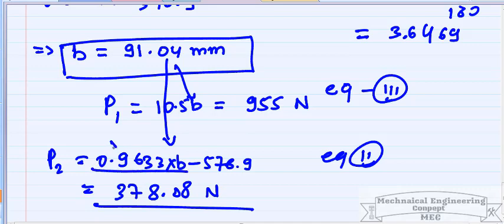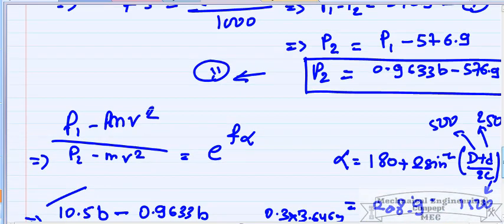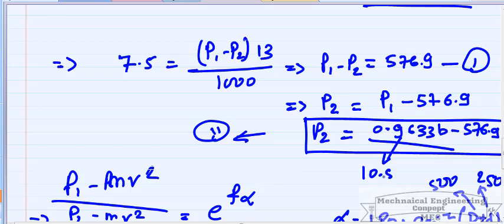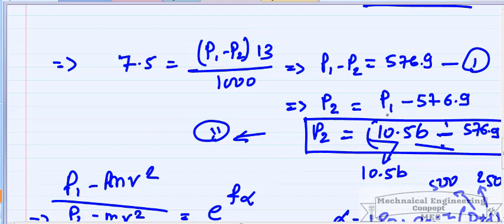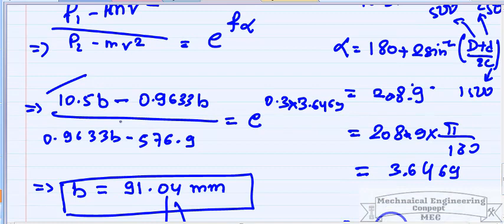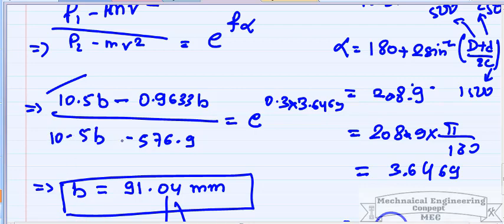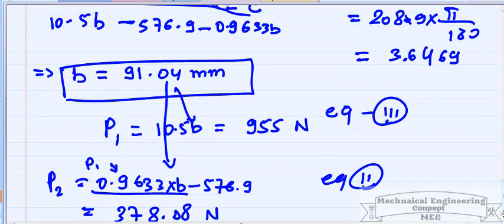Correcting the earlier working: in the tension ratio equation, in place of P1 we put 10.5B, and in place of mv² we put 0.9633B, giving (10.5B − 0.9633B) / (P2 − 0.9633B) = e^(0.3 × 3.6469). This correctly yields B ≈ 91 mm, confirming our results.